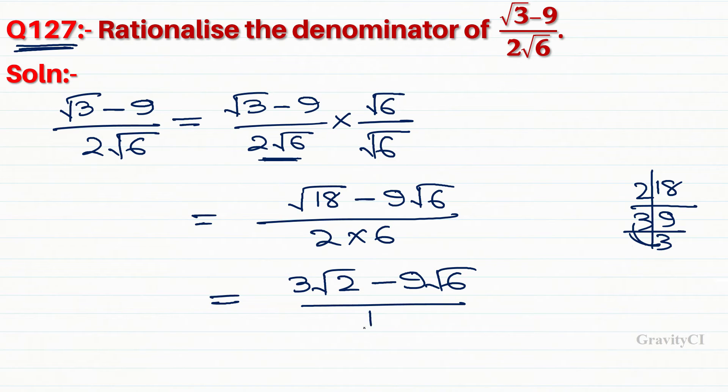In the numerator, 3 is common, so we take it out: 3 times (√2 minus 3√6) by 12.